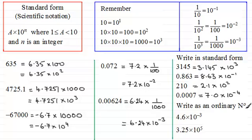So write as an ordinary number. For this one, 4.6 times 10 to the minus 3, we just move the decimal point back to the left 3 places. So I'm going to get 0.0046. If the point is between the 4 and 6, move it back 3 places: 1, 2, 3. You get that, 0.0046.